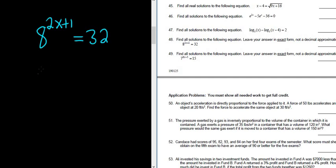So 8 can be written as 2 cubed. That's the first step there. And we still have the 2x plus 1. And 32 can be written as 2 to the 5th.